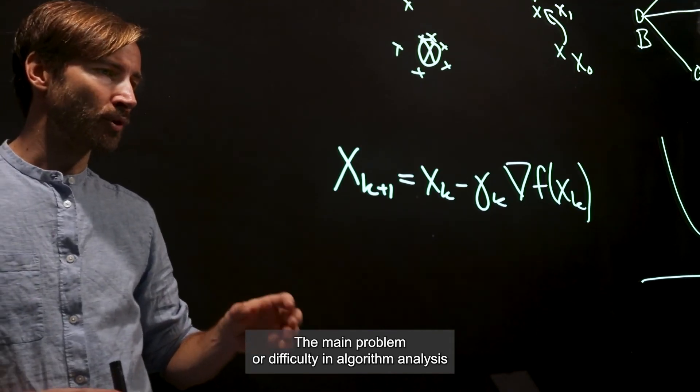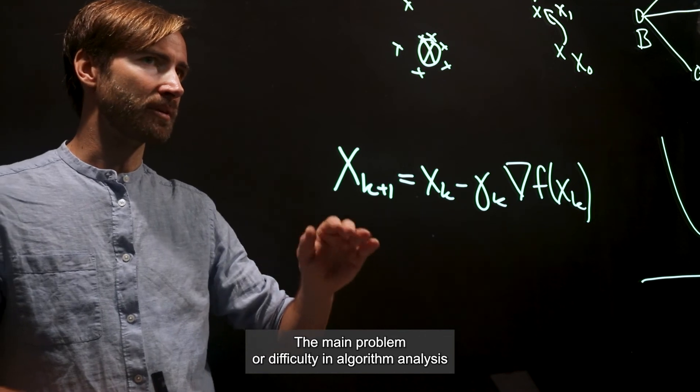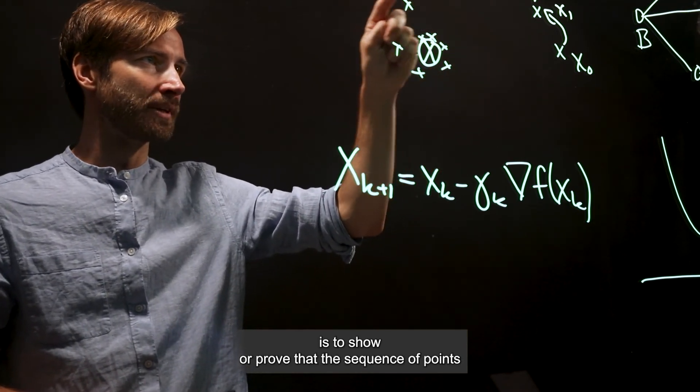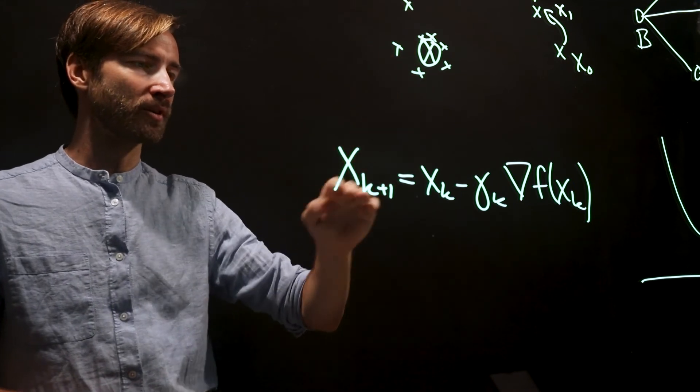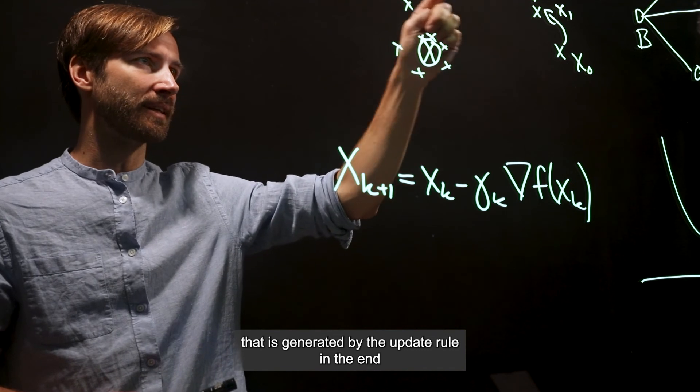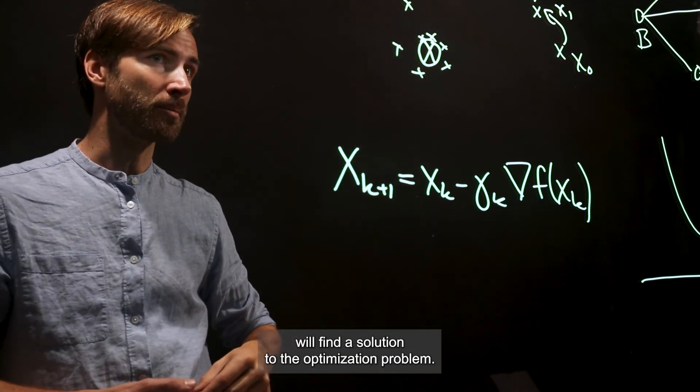The main problem or difficulty in algorithm analysis is to actually show or prove that the sequence of points that is generated by the update rule actually in the end will find a solution to the optimization problem.